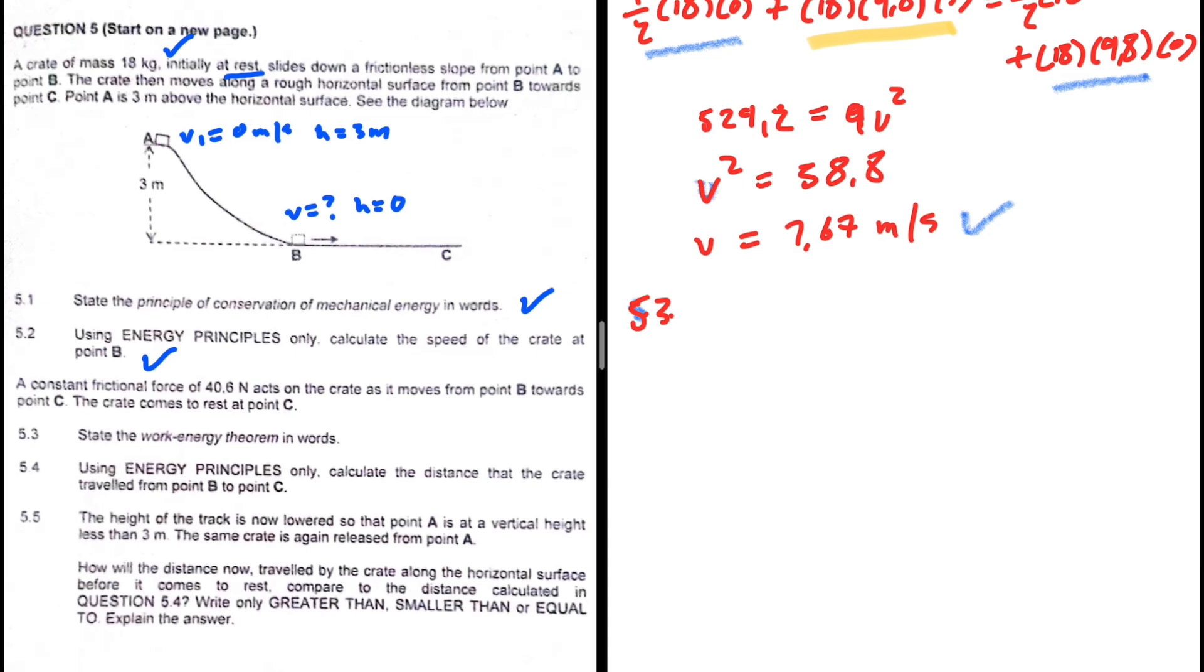One question and we have two definitions - you're very fortunate if you come across that in the examination. A constant frictional force of 40.6 newtons acts on the crate as it moves from point B to point C. The crate comes to rest at point C. In 5.3 we state the work-energy theorem. Then 5.4: use energy principles only to calculate the distance that the crate travels from point B to point C. We need a free body diagram first for the forces acting on our crate from point B to point C.